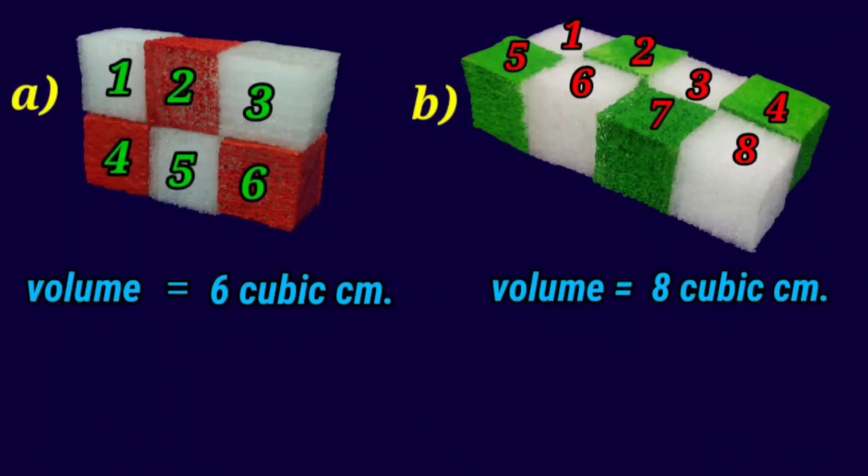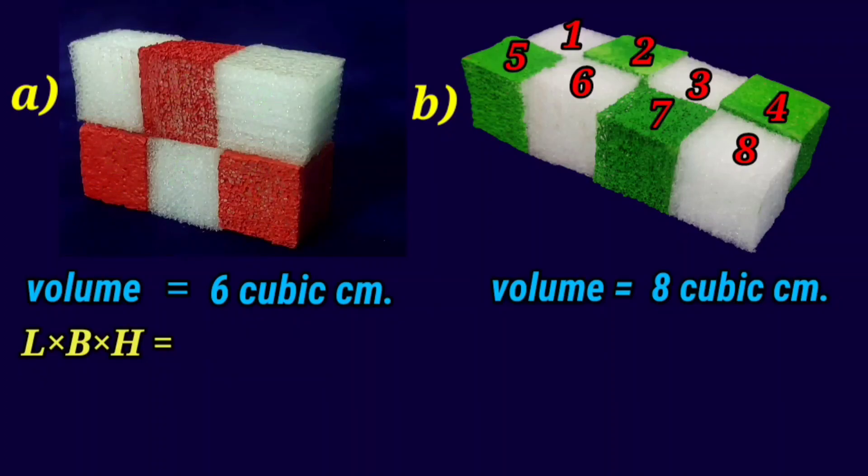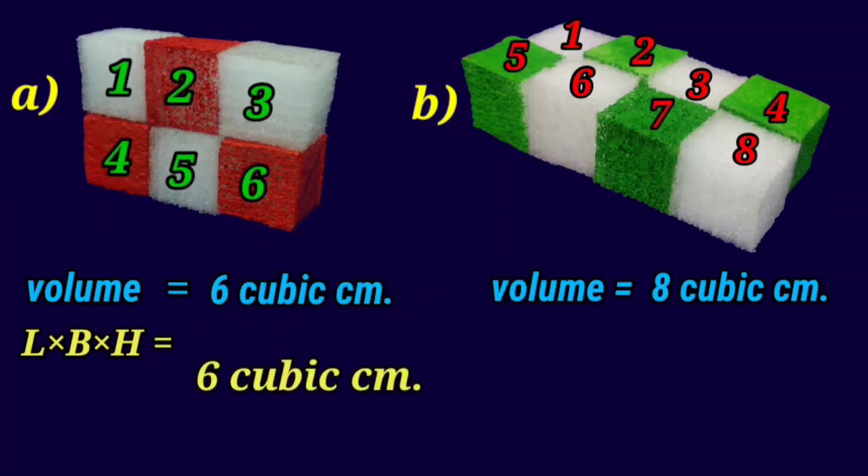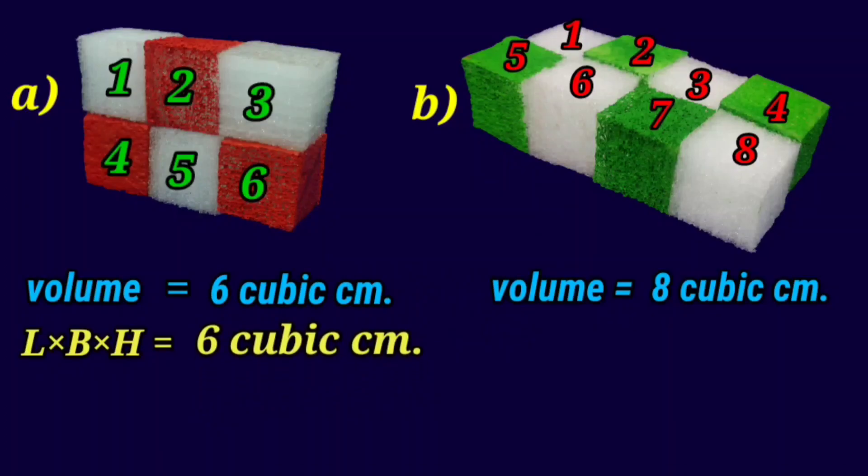Now, let us find the product of length, breadth and height of these cuboids. In figure A, number of cubes along its length are 3, so its length is 3 cm. Number of cubes along its breadth 1, so its breadth is 1 cm. And number of cubes along its height are 2, so its height is 2 cm. And this way, the product of length, breadth and height is 6 cm³.